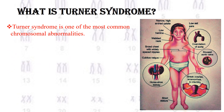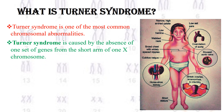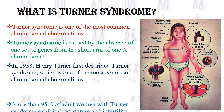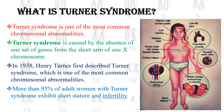Turner syndrome is one of the most common chromosomal abnormalities, caused by the absence of one of the genes from the short arm of one X chromosome. In the year 1938, Henry Turner first described Turner syndrome. More than 95% of adult women with Turner syndrome exhibit short stature and infertility.